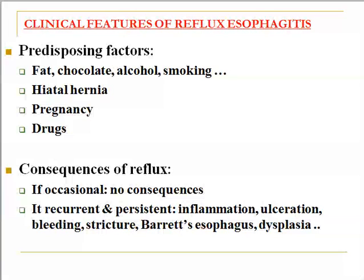The consequences of this reflux: if the condition is occasional, there is no consequence. But if it is recurrent and persistent for a long time, inflammation can start in the esophageal mucosa, followed by ulceration, bleeding, fibrosis resulting in stricture, Barrett's esophagus, and dysplasia — appearing as the metaplastic condition in the lower end of esophagus.